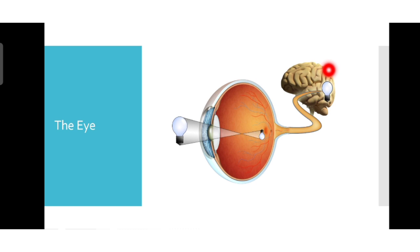We can see that the image of the bulb formed on the retina is quite smaller and it is inverted also. But the brain eventually turns the image in the right way and in the right size too. And that is how we perceive the different things that we see in the environment.